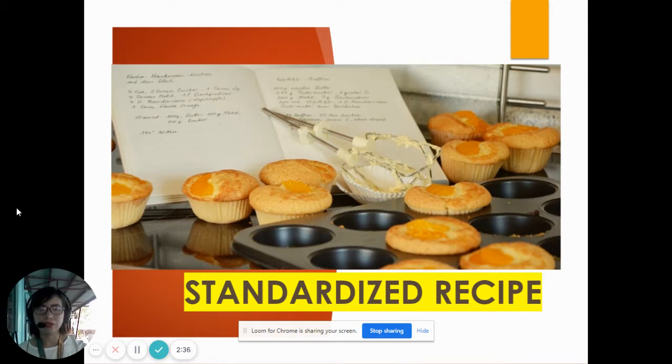Next is the ingredients. Remember that when you list ingredients in the recipe, make sure that you list it in the order of use, sequence according to the first one you will use up to the last ingredients. Then the third one is the direction, the step-by-step procedures, which is numbered.